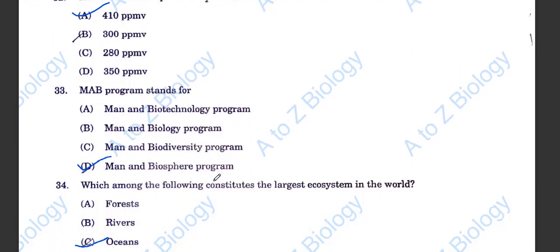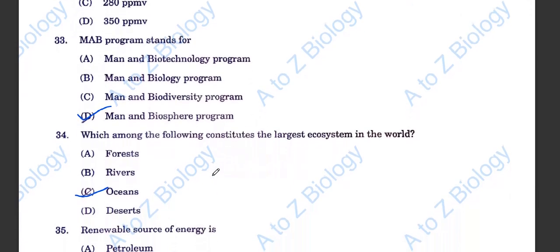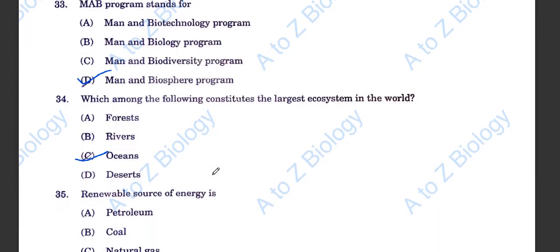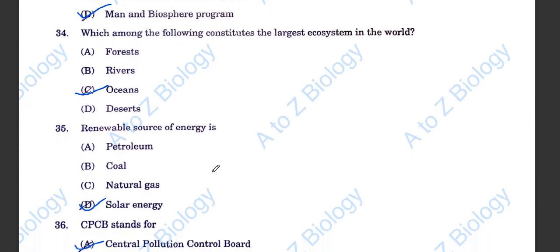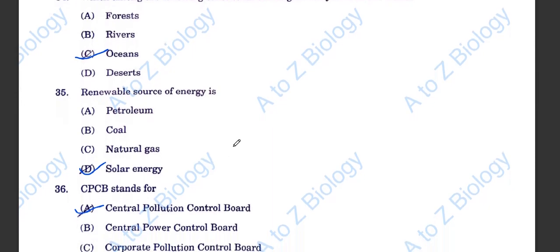Question 34. Which among the following constitutes the largest ecosystem in the world? Oceans. Renewable source of energy is solar energy. CPCB stands for Central Pollution Control Board, option A.